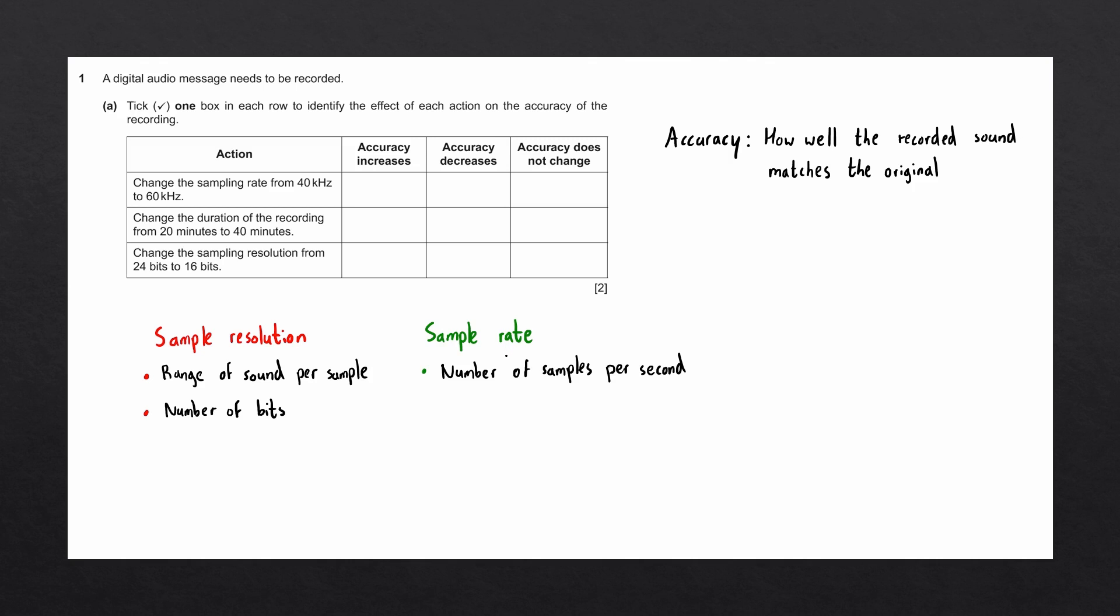Sample rate, on the other hand, refers to the number of samples that can be recorded per second. When we record sound, we measure the amplitude of a sound wave. Increasing the sample rate increases the frequency that we can do this.